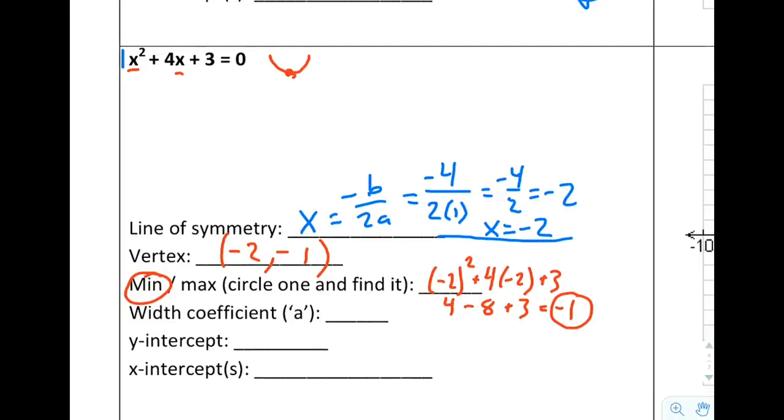So looking down at this problem here, we said earlier that a was going to be 1. That 1 is usually not written, but when there's nothing in front of x squared, it's going to be 1. So 1 is our width coefficient. That was really easy to find here.